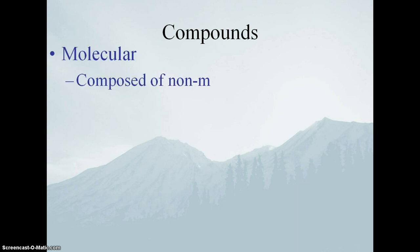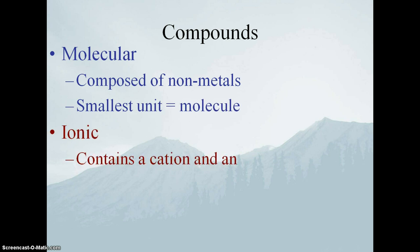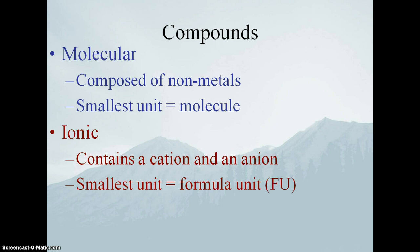We're talking about compounds. We have two very distinct groups of compounds: molecular compounds and ionic compounds. Molecular compounds are composed of non-metals — everything to the right of the stair step — so nitrogen, oxygen, chlorine, things like that. The smallest unit of a molecular compound is called a molecule, hence the term molecular compounds.